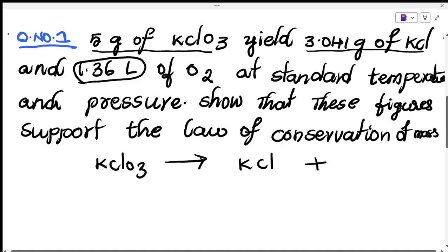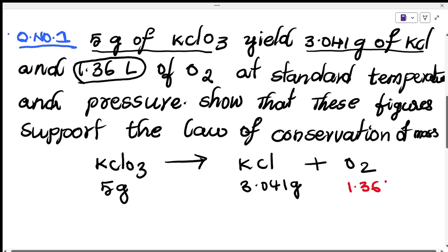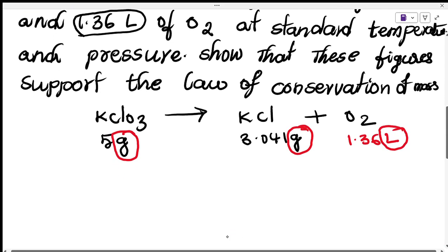KClO3 on decomposition gives KCl plus oxygen. They have taken 5 grams of KClO3, and we got 3.014 grams of KCl and 1.36 liters of oxygen. The reactant mass is in grams, one product is in grams, but oxygen is given in liters. So we have to convert the oxygen volume into grams.